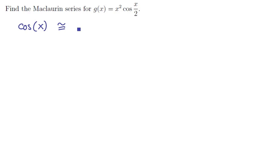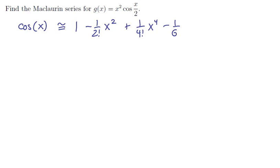Cosine of x's Taylor series is 1 minus 1 over 2 factorial times x squared, plus 1 over 4 factorial times x to the 4th, minus 1 over 6 factorial times x to the 6th, plus 1 over 8 factorial times x to the 8th, and we keep alternating even powers and signs. So the next term would be 1 over 10 factorial times x to the 10th, plus 1 over 12 factorial times x to the 12th, and so on.